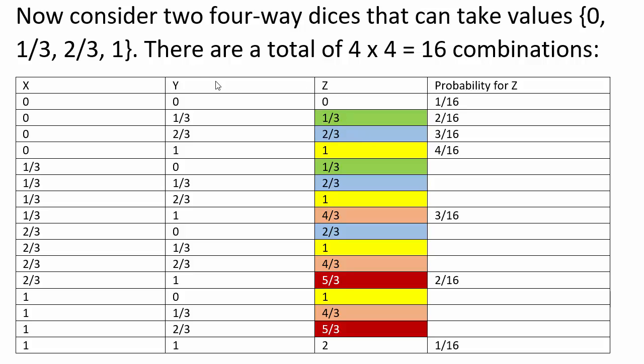So hopefully I've convinced you that no matter how finely you divide the space between zero and one, if you divide it equally for two cases and then add the two variables together, you'll tend to get the center, the one value, most of the time, while very rarely you'll get either 0 or 2, the minima or the maxima. And the in-between values will be linearly related in terms of probabilities.